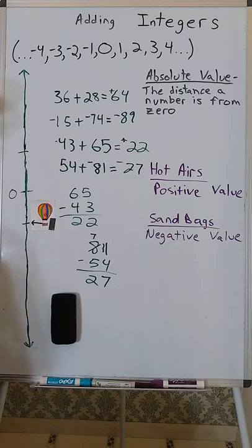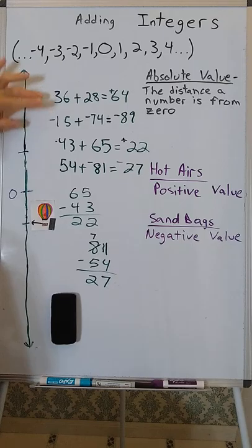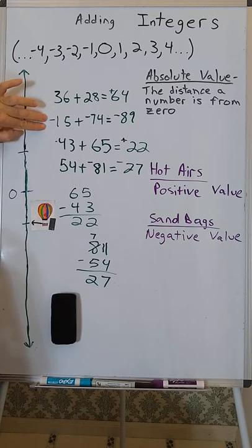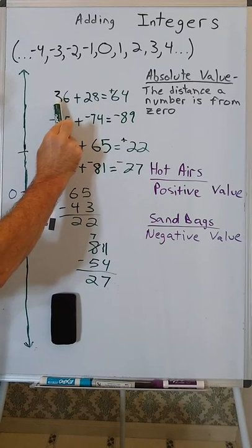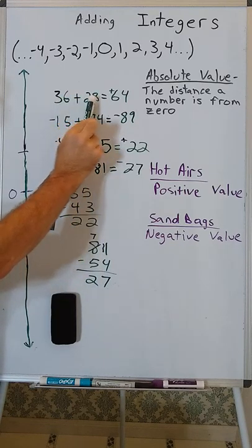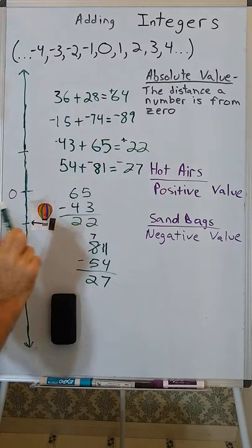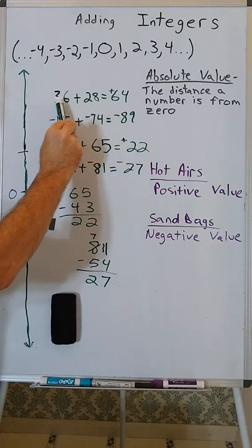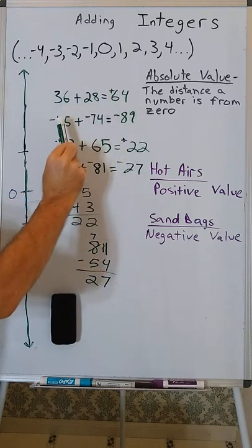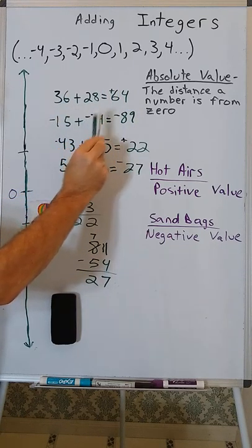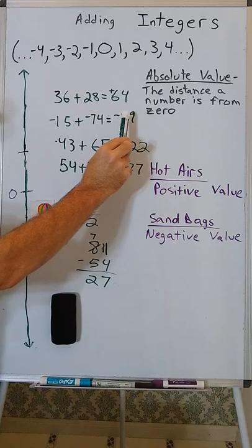So what's the idea here? When the signs are the same — both hot airs or both sandbags — we add the absolute values, the distances from zero. If they're both positive, the result will be positive. If they're both negative, the sum will be negative.